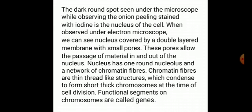The nucleus is the most important part of all eukaryotic cells. Inside the nucleus, there is a round, darkly stained nucleolus. The nucleus is covered by a double membrane which is porous, surrounded by a double-layered membrane. These pores allow transport of different substances in and out of the nucleus to the cytoplasm.